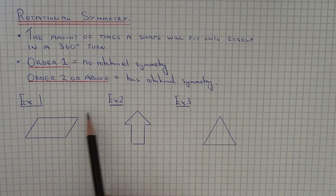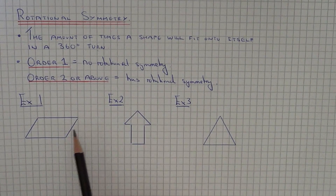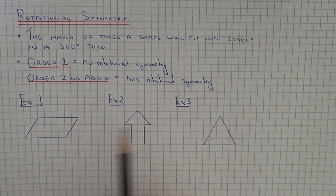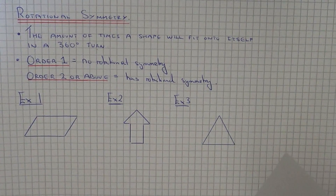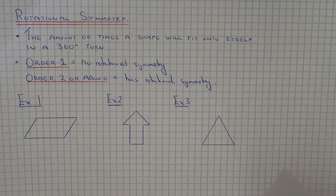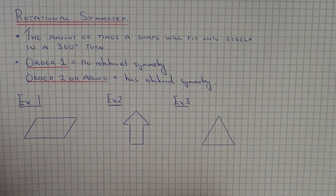So let's have a look at the three examples here. Let's work out if the shapes have rotational symmetry and also write down the order of rotational symmetry for each shape.